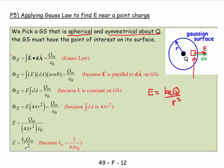Applying Gauss's law: the flux equals the integral of E dot dA, which equals Q inside over epsilon naught. Because the electric field is parallel to the area vector on the Gaussian surface, the flux equals the integral of the magnitude of E times the magnitude of dA times cosine of zero degrees, which equals Q inside over epsilon naught. And because the electric field is constant on that Gaussian surface, I can take E outside the integral, giving flux equals E times the integral of dA, which equals Q inside over epsilon naught.